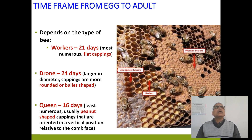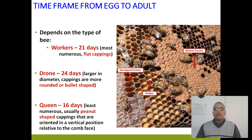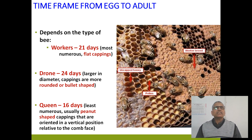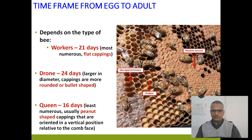Coming to the bee caste individuals, there are three different forms: one is workers, number two is drone, and third one is queen. The life cycle duration for worker is normally 21 days, drone is 24 days, and queen is 16 days. There is only one queen, around 15 to 20 drones, and workers are in thousands. The worker bee cell is in the form of flat cappings, whereas the drone cell is rounded or bullet shaped, and the queen cell is peanut shaped, as shown in the figure.